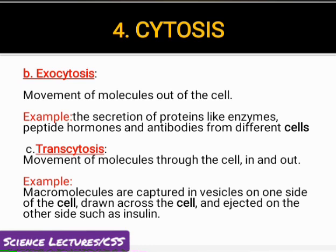Third type is transcytosis. یہ bulk molecular movement ہے by vesicle formation inside and outside of the cell — macromolecules are captured in vesicles on one side of the cell and dragged to the other side of the cell for ejection.